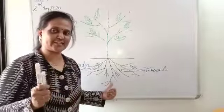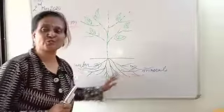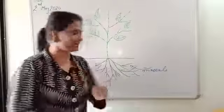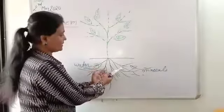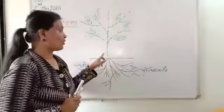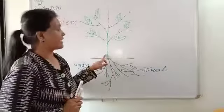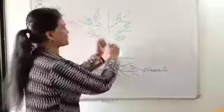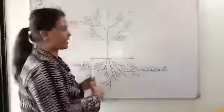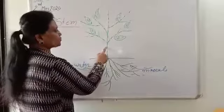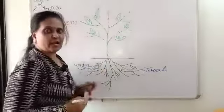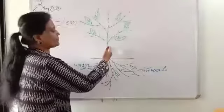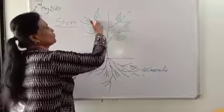Stem carries the minerals and water and supplies it to the whole plant. Roots collect the minerals and water from soil and give it to the stem. The roots collect the water, give it to the stem, and the stem supplies this water to the whole plant.